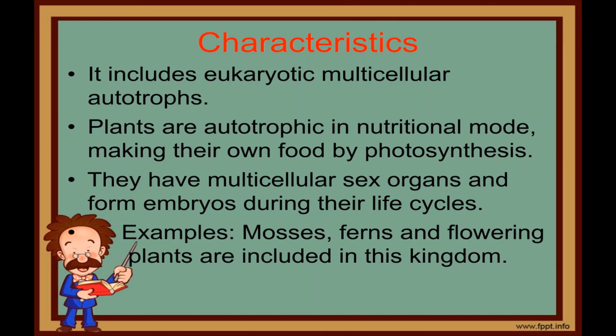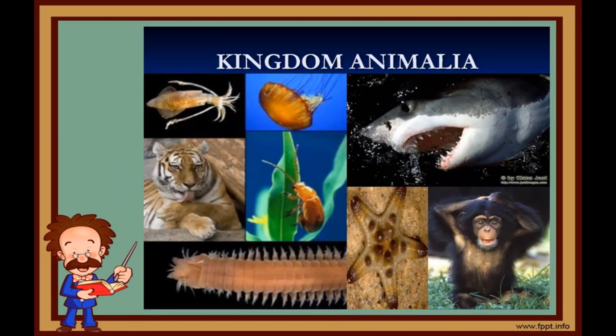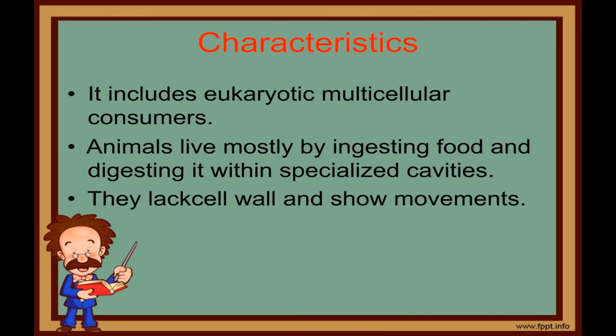Kingdom Animalia includes all heterotrophs. They are holozoic in nutrition. It includes eukaryotic multicellular consumers. Animals live mostly by ingesting food and digesting it within specialized cavities. They lack cell walls and show movement — they have the capacity for locomotion. Growth is determinate with a definite pattern.